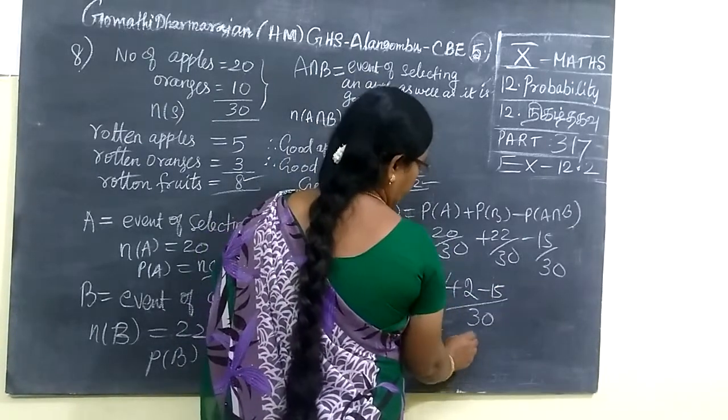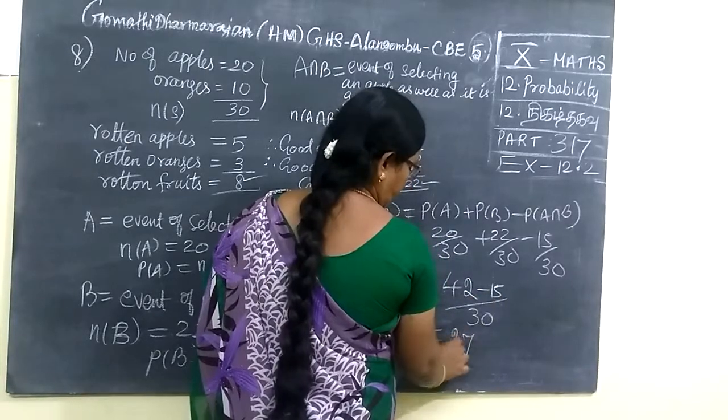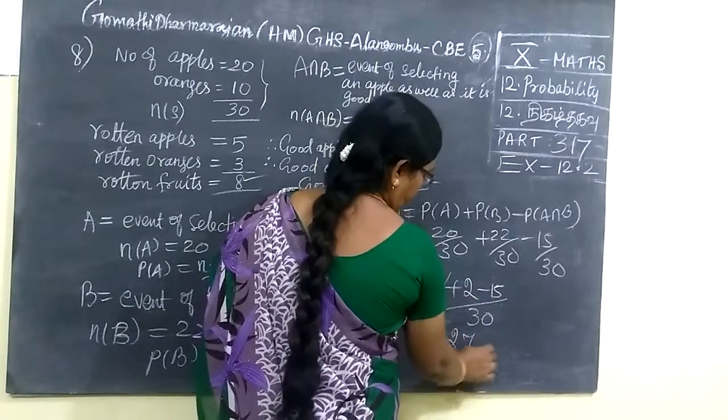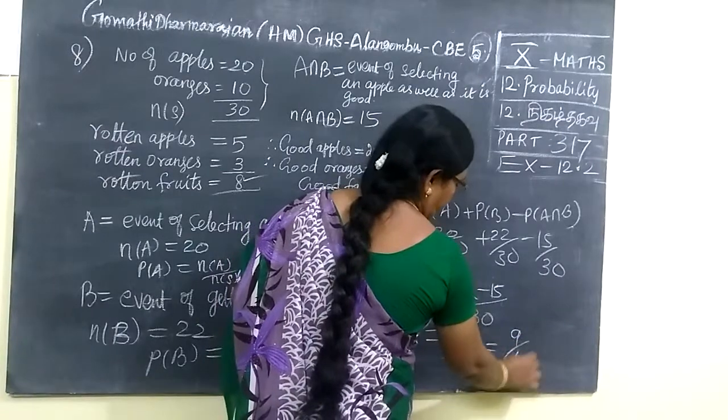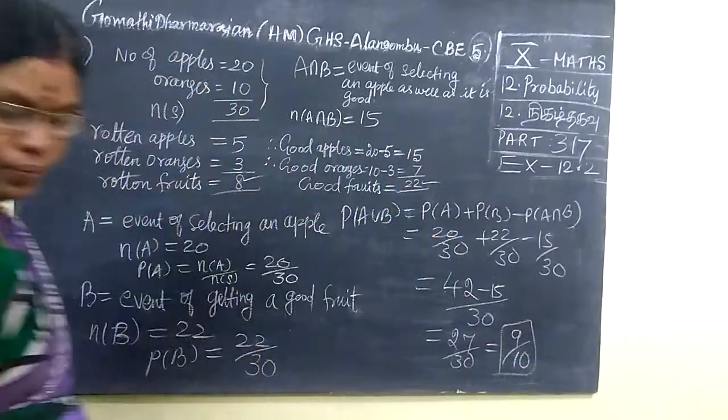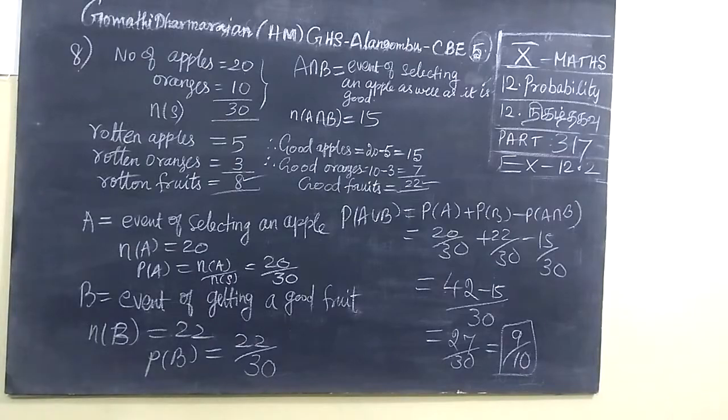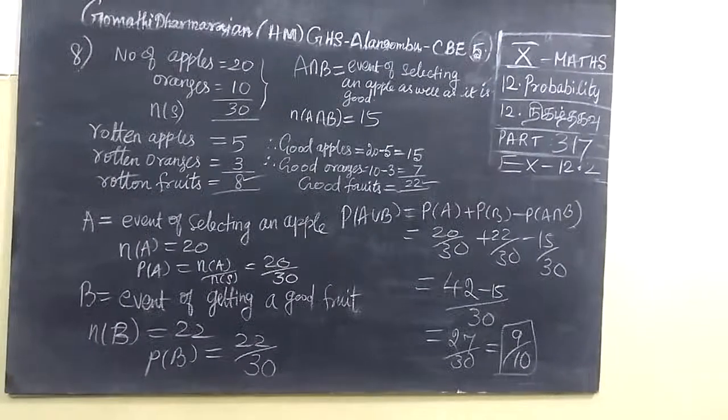So 12 minus 5, 7. 3 minus 1, 2. So 27 by 30, which simplifies to 9 by 10. Now we see that answer for that. The answer is 9 by 10.